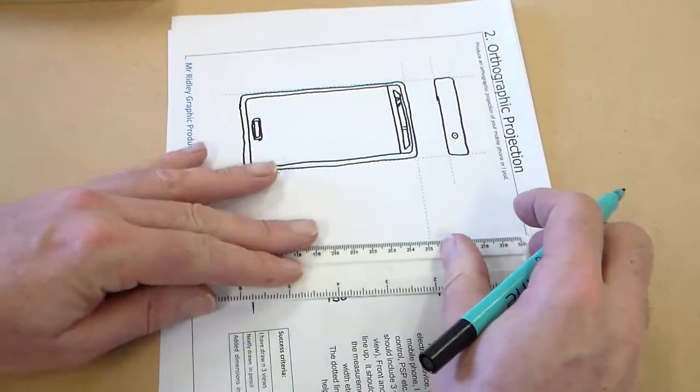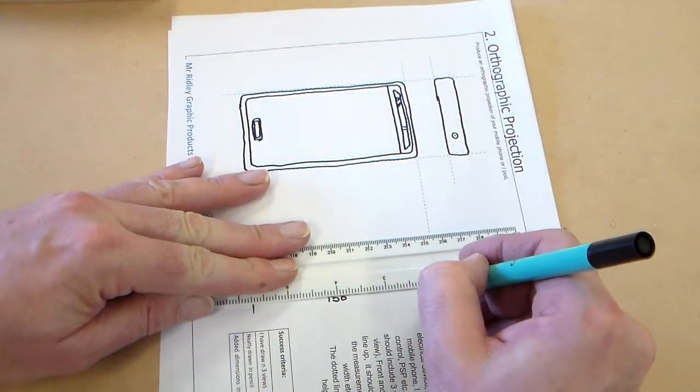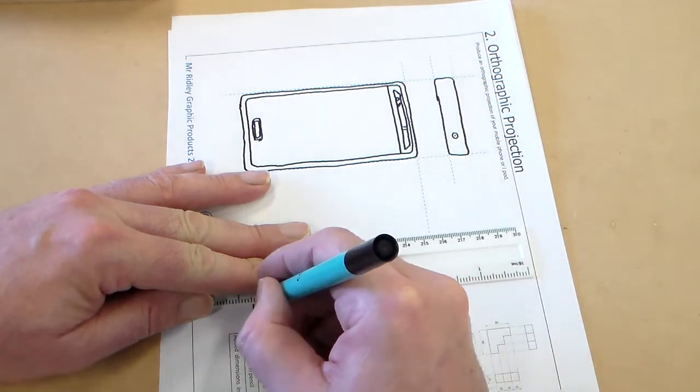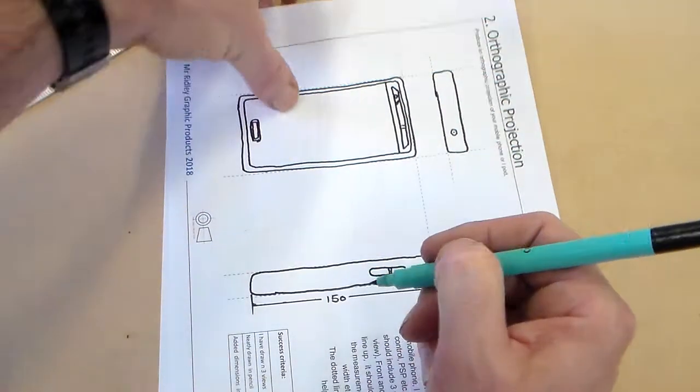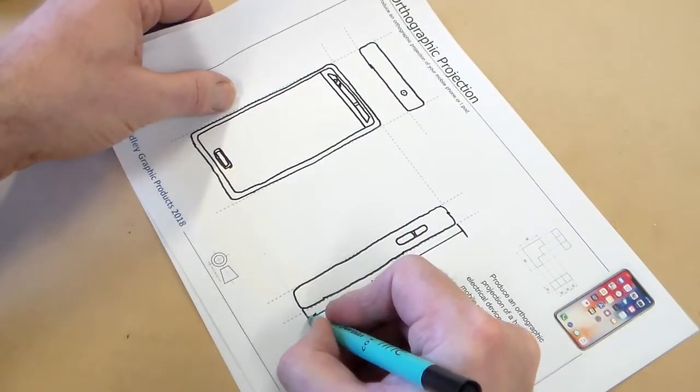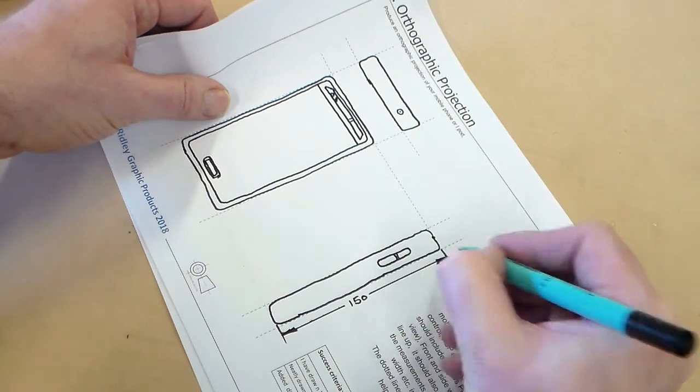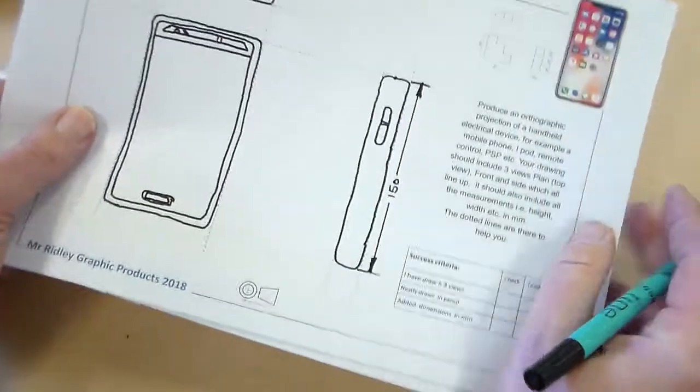And then we're going to put in the dimension arrows. Now with the dimension arrows, we put those, and a nice arrowhead there, and fill the arrowhead in.